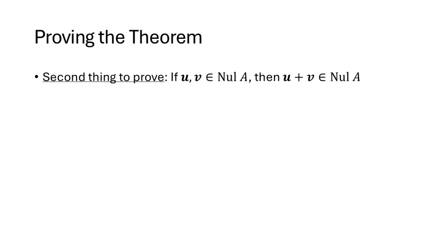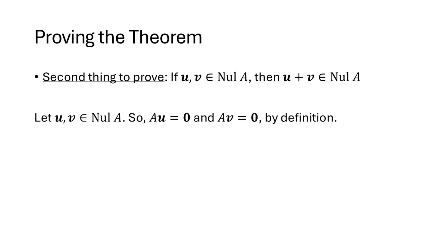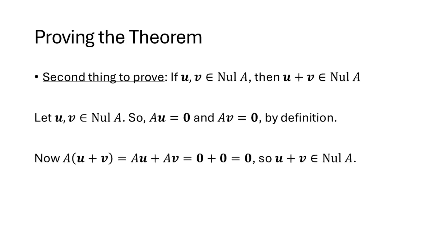For closure under addition: let u and v be vectors in the null space of A. By definition, Au = 0 and Av = 0. We want to know what happens when we multiply A times (u + v). Distributing, A(u + v) = Au + Av = 0 + 0 = 0. Since A times (u + v) equals the zero vector, that shows us that u + v is in the null space.